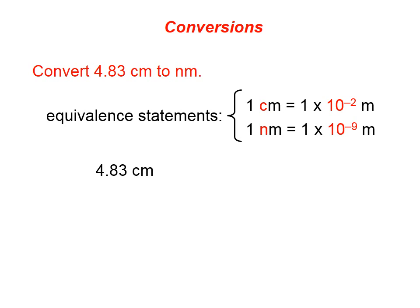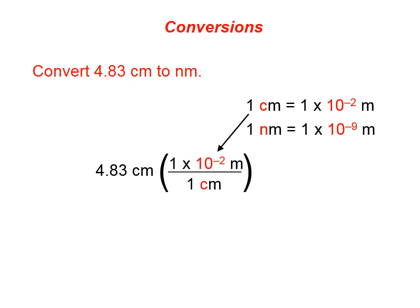So here's what we do. We write down the quantity that's given, and we're going to put a conversion factor there. This unit, centimeters, has to be canceled. So we know that centimeters has to go down and to the right in this conversion factor. So that conversion is going to go there with the one centimeter on the bottom and the one times ten to the negative second meters on top. Centimeters, then, will cancel.